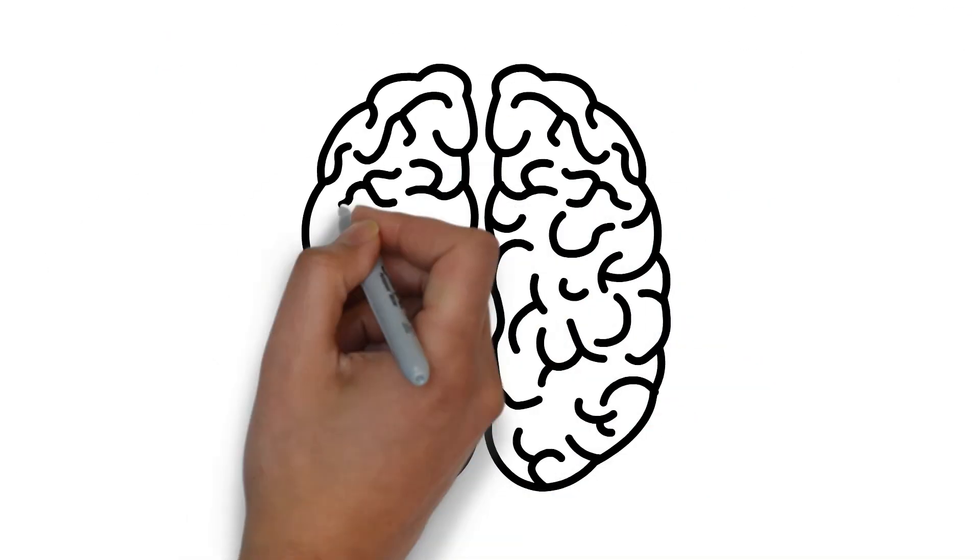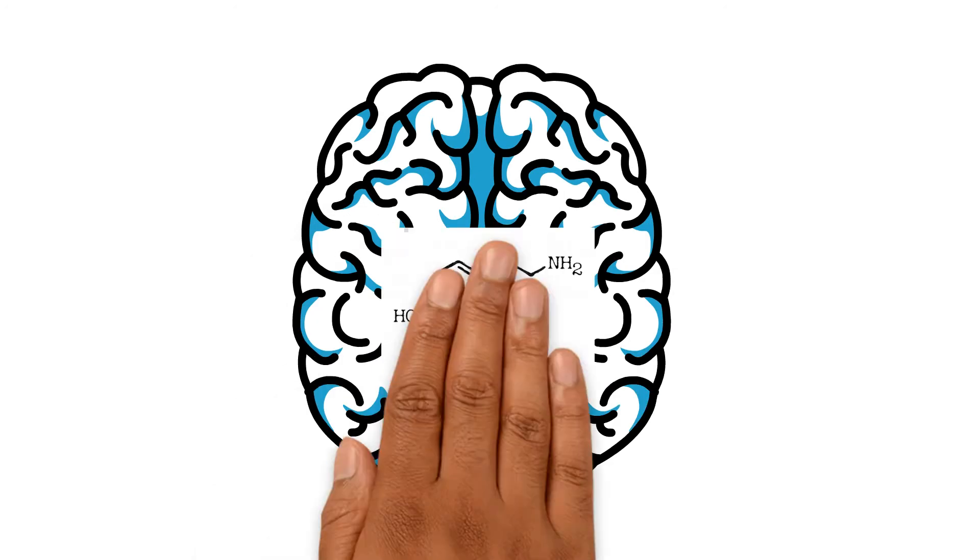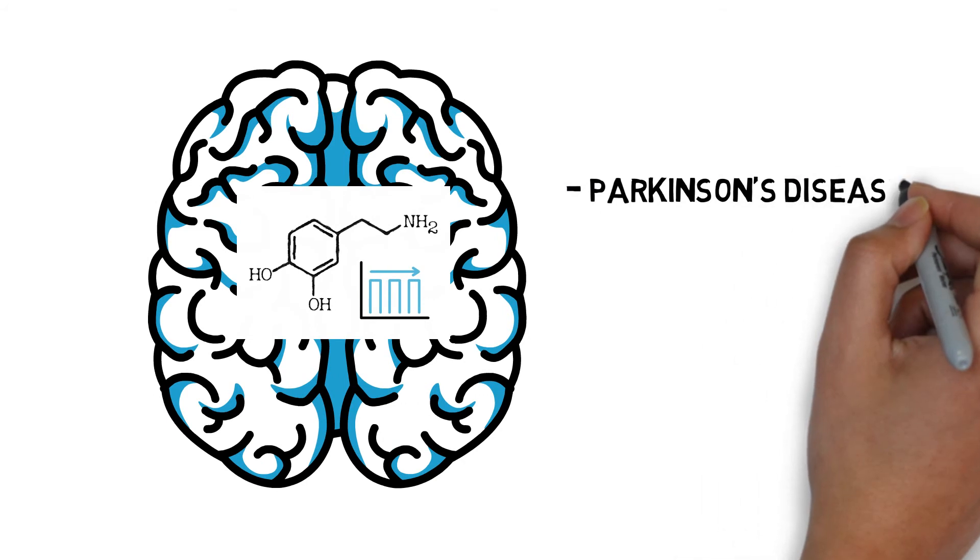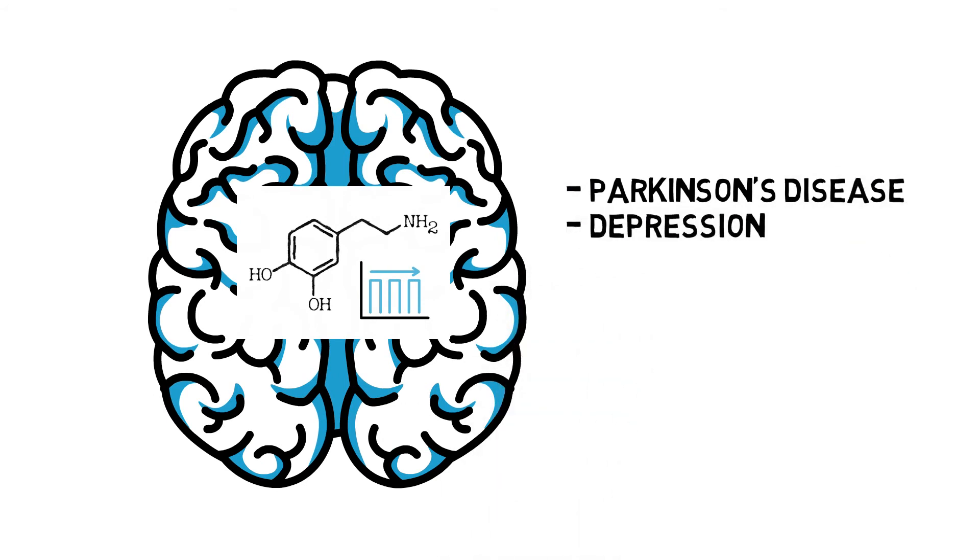Maintaining a good level of dopamine is important for our brain functions. Many diseases and disorders, such as Parkinson's disease and depression, are considered to be associated with low levels of this neurotransmitter.